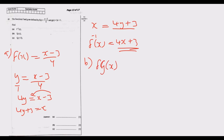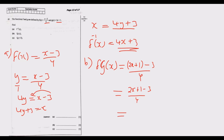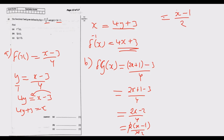In the f function, wherever there is x, we substitute g(x) = 2x plus 1. So f(g(x)) equals (2x plus 1 minus 3) over 4, which simplifies to (2x minus 2) over 4. Factoring out 2 gives 2(x minus 1) over 4, which simplifies to (x minus 1) over 2. So f of g of x equals (x minus 1) over 2.